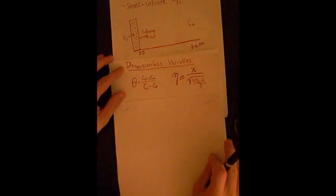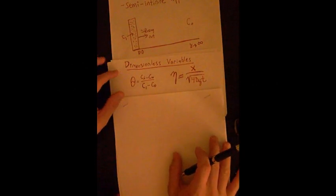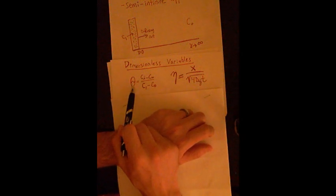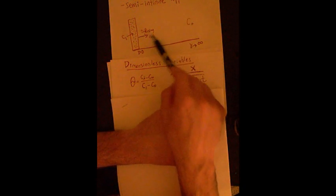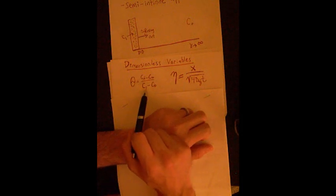So here if we look at these dimensionless variables, these would be the appropriate dimensionless variables for the situation where theta is your dimensionless concentration that's given by your unknown concentration, Ci minus C0, which is the original concentration out here, and then divided by C1 minus C0.